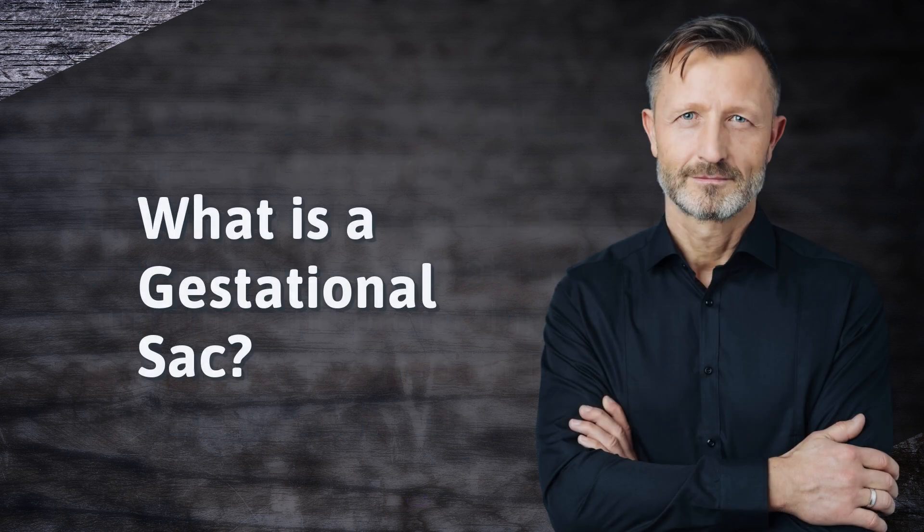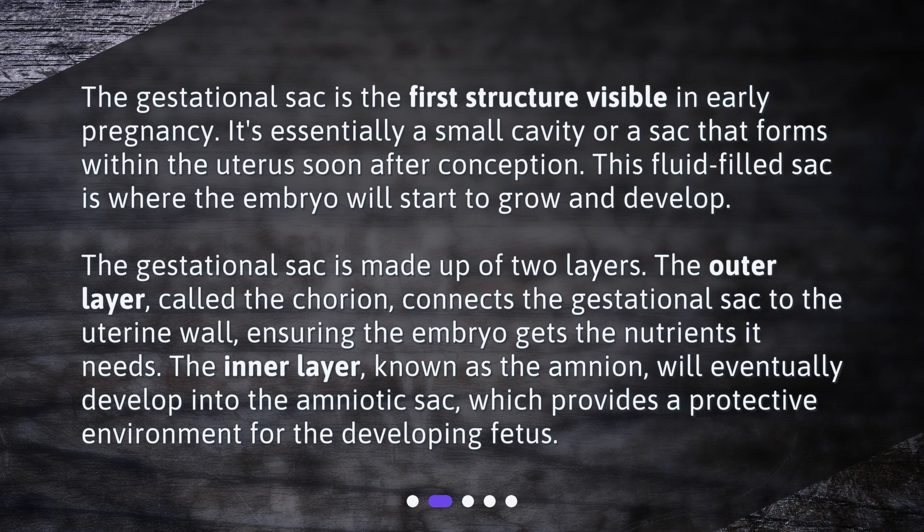What is a gestational sac? The gestational sac is the first structure visible in early pregnancy. It's essentially a small cavity or sac that forms within the uterus soon after conception. This fluid-filled sac is where the embryo will start to grow and develop.